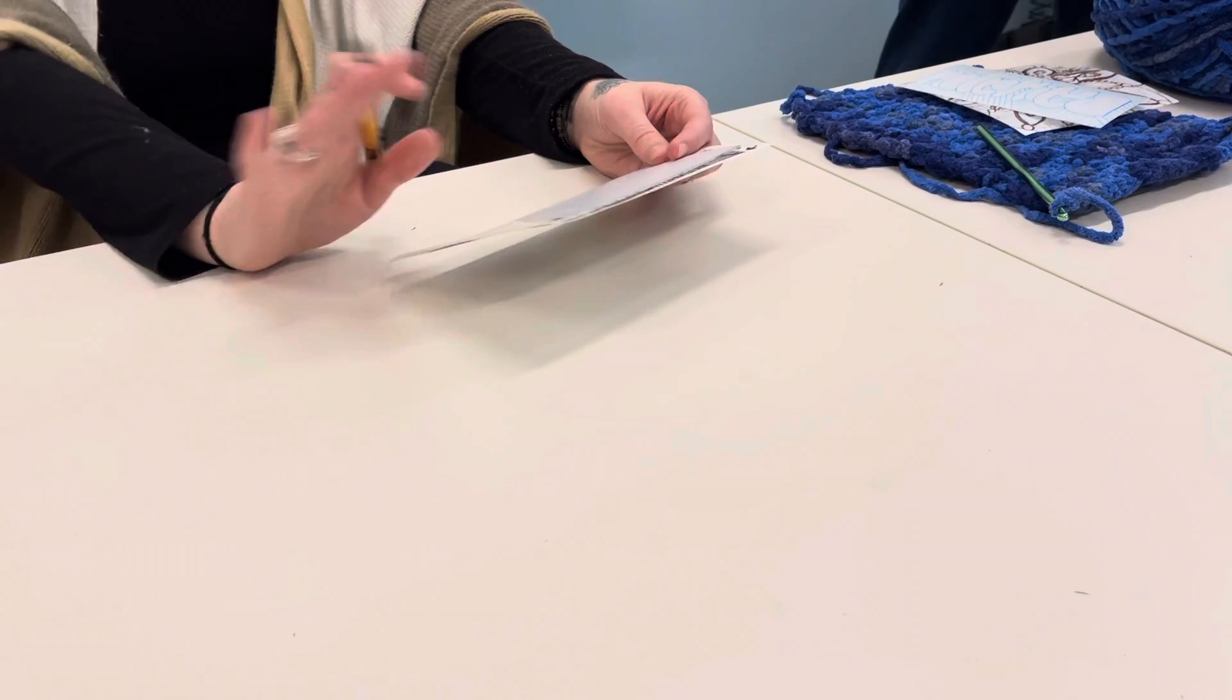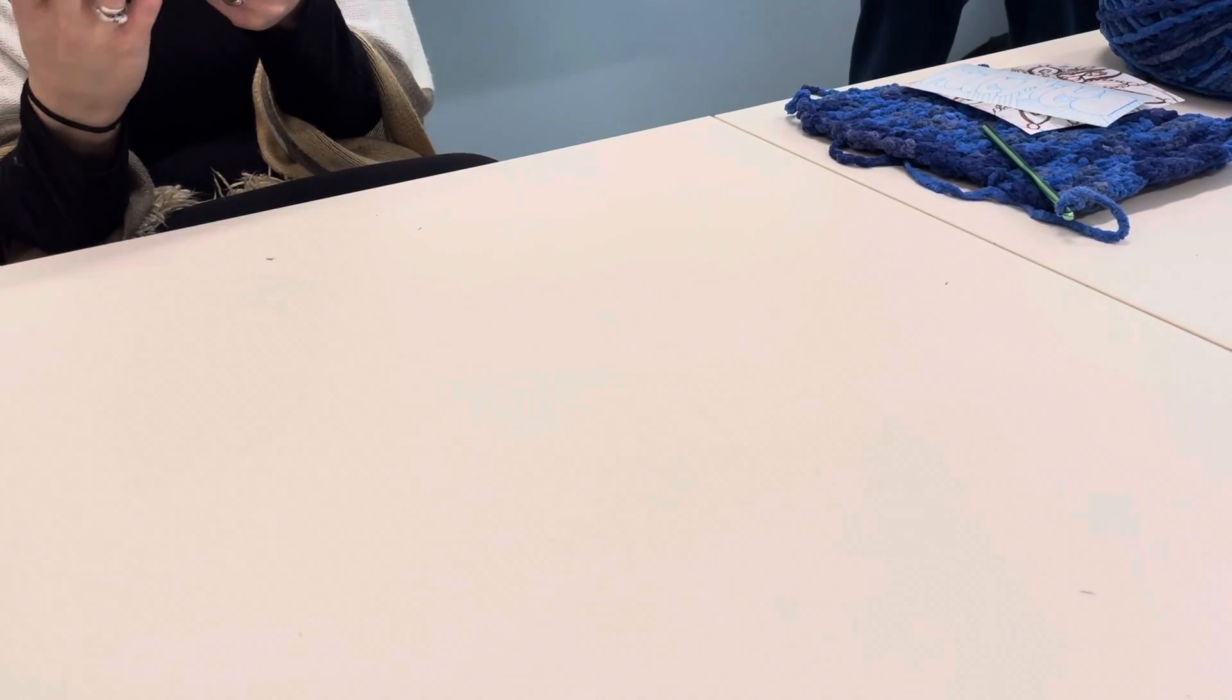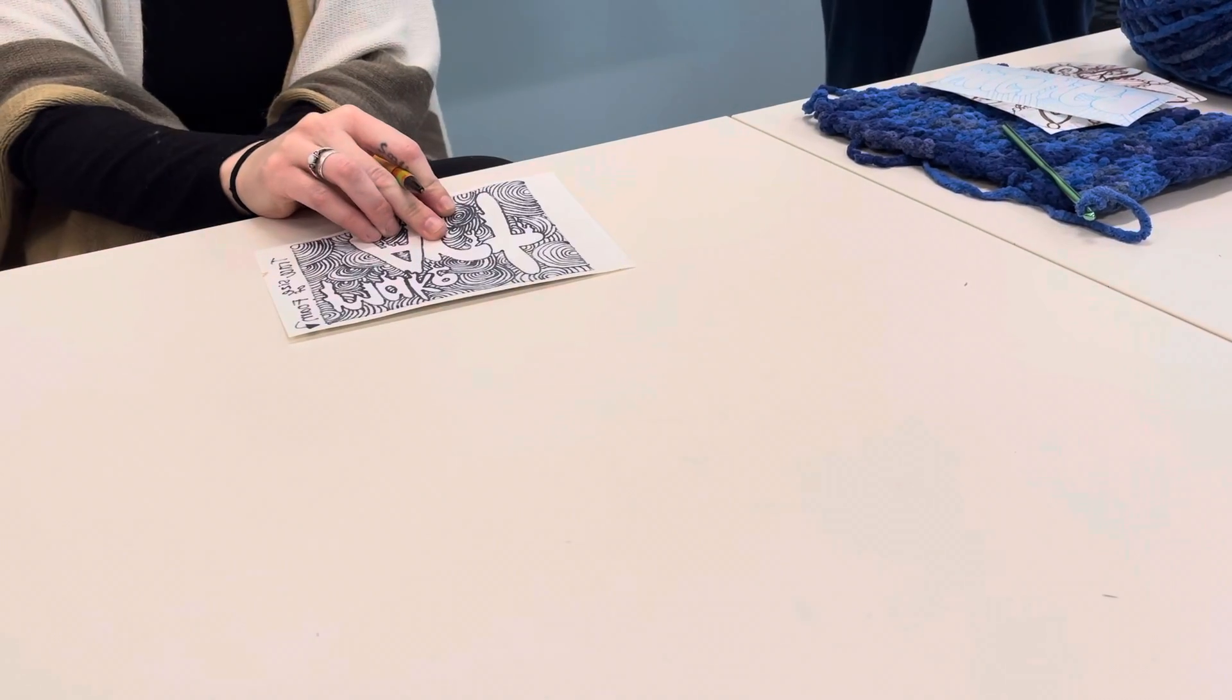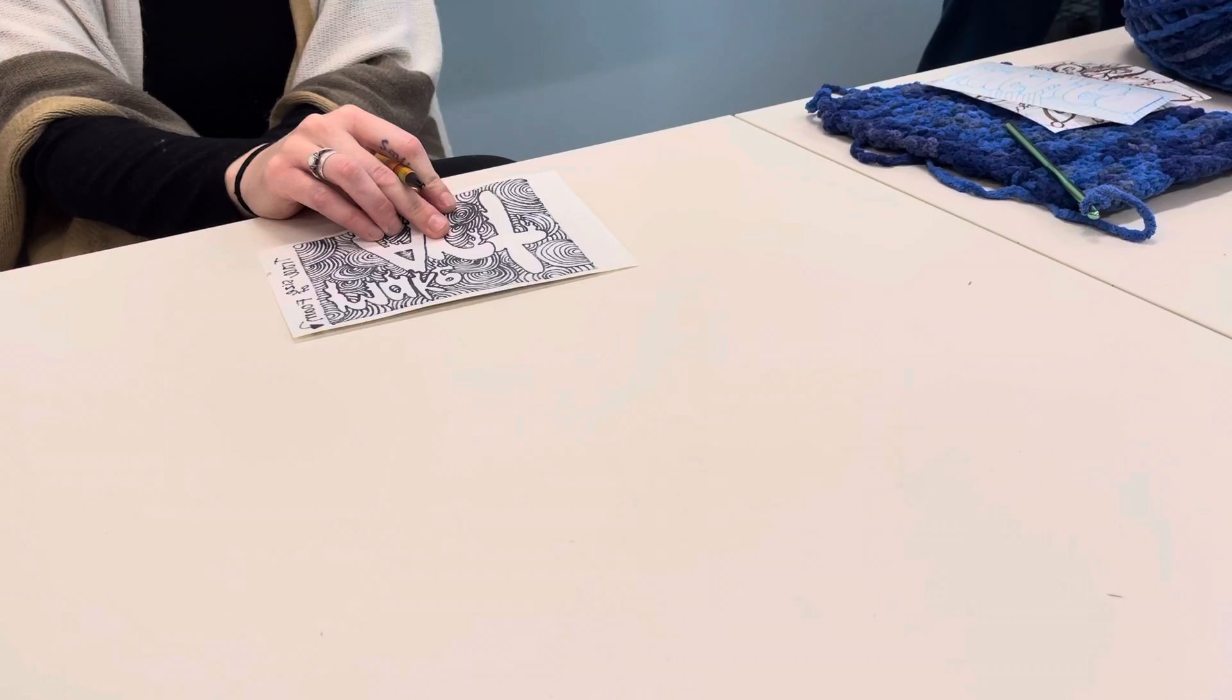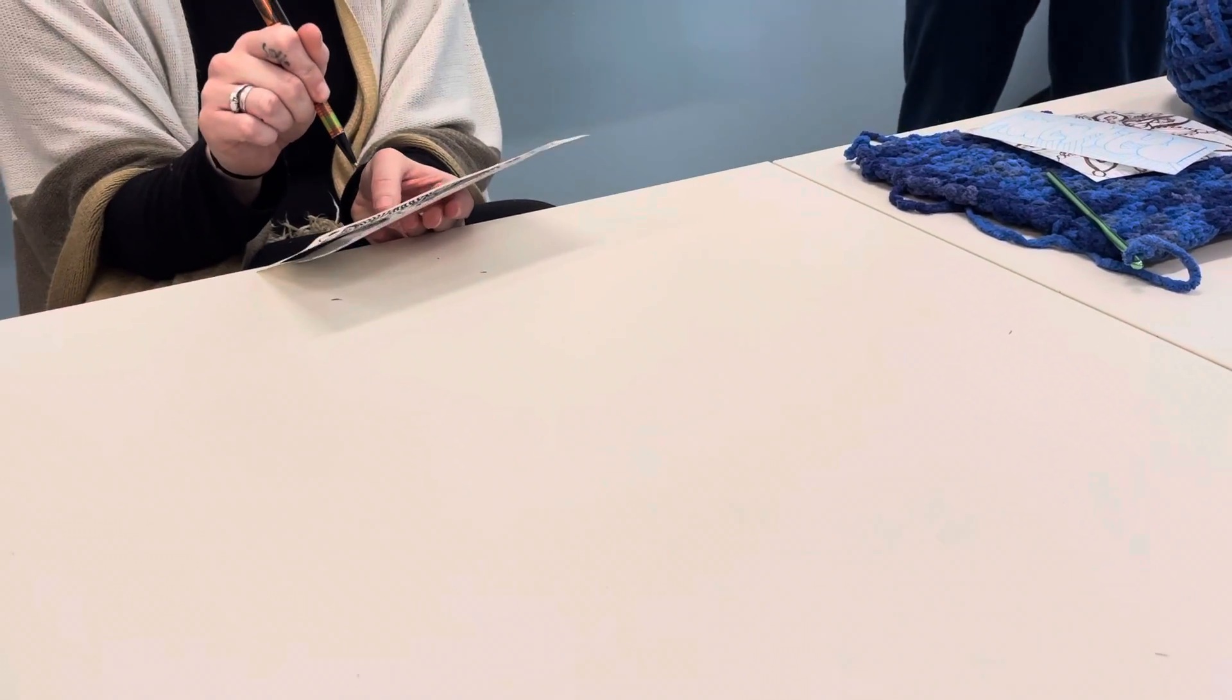The reason for this difference is because whenever you make a print, think about a stamp. When you make a print, you flip it over and print it. So everything's backwards. That's why if you do words, we need to trace what's on the backside.